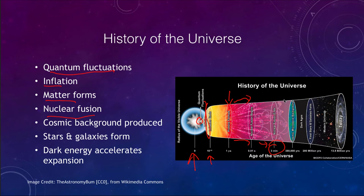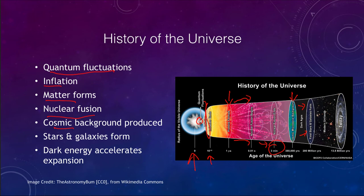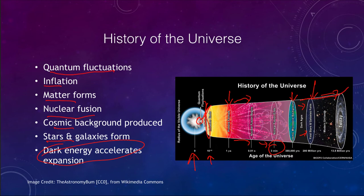Over the next few hundred thousand years the universe continued to expand and cooled enough that atoms could form. Once electrons combined with protons to form hydrogen, the cosmic background radiation was released. Then came the dark ages — the stage between the release of microwave background radiation and the formation of the first stars and galaxies, where nothing much would have been visible. Then galaxies and the modern universe began to form, and finally dark energy accelerated the expansion, which is continuing to increase at an increasing rate.